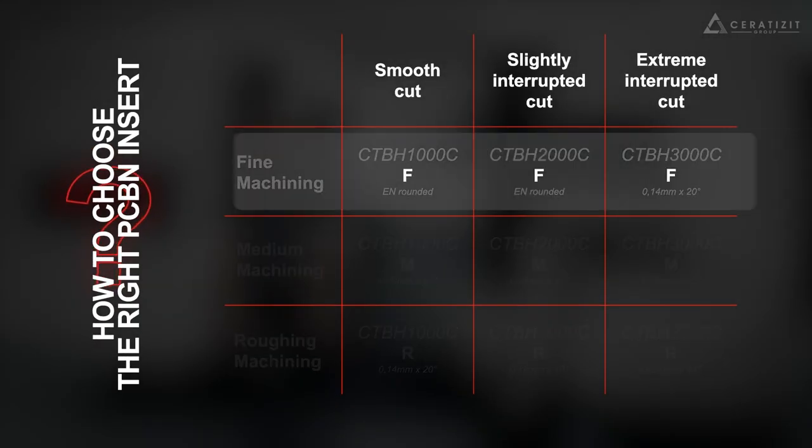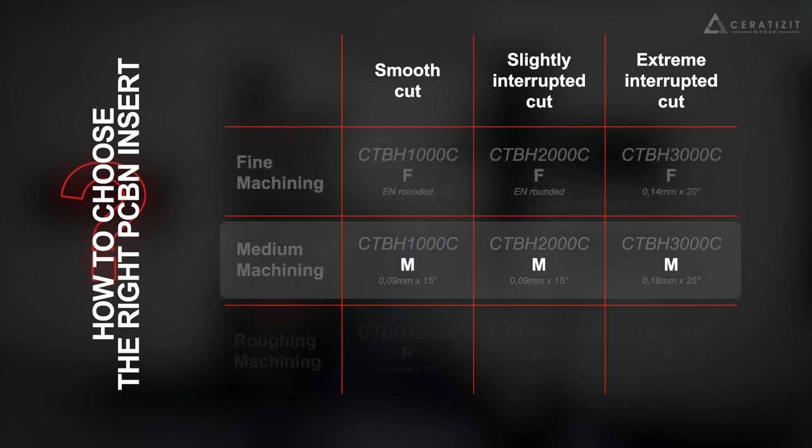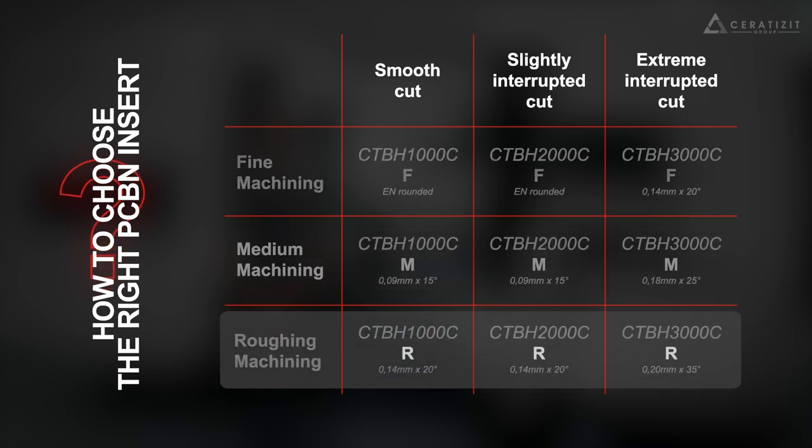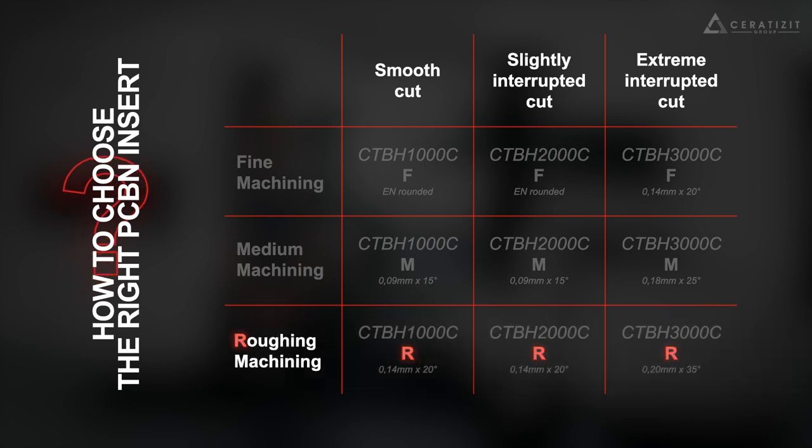The F stands for fine machining, for excellent surface quality and dimensional precision. M for medium machining, for good interpolation between interrupted cutting and productivity. R for roughing machining, extremely stable edge preparation.